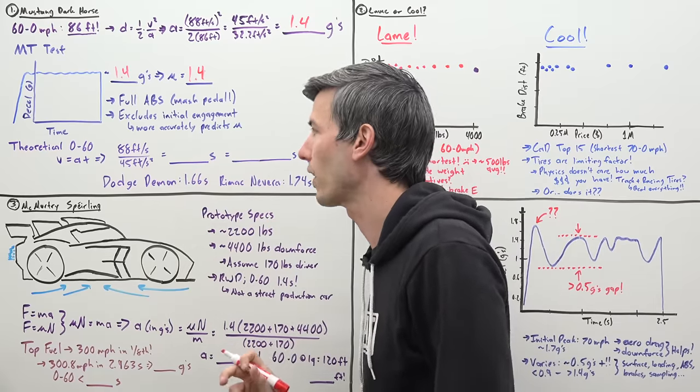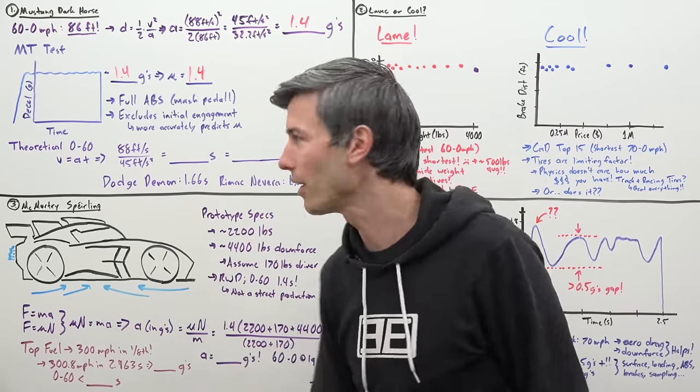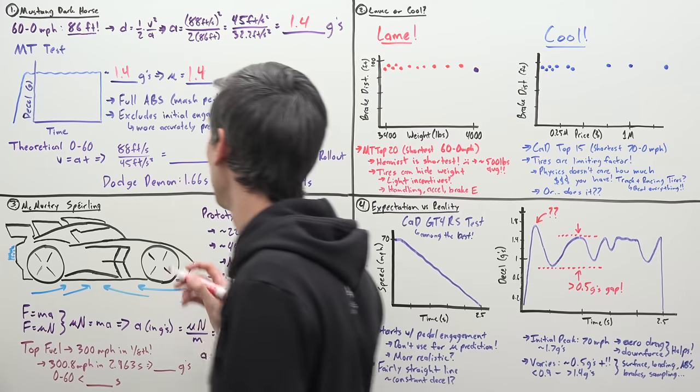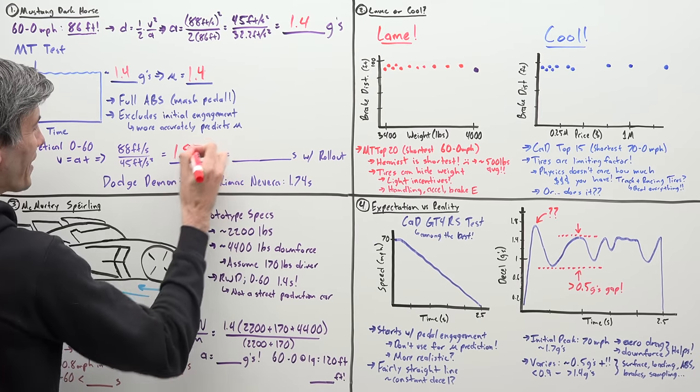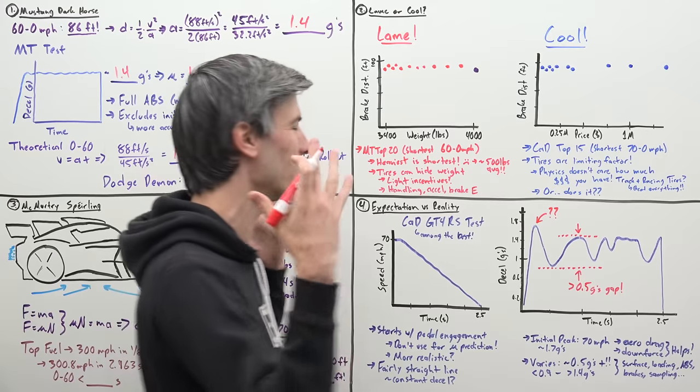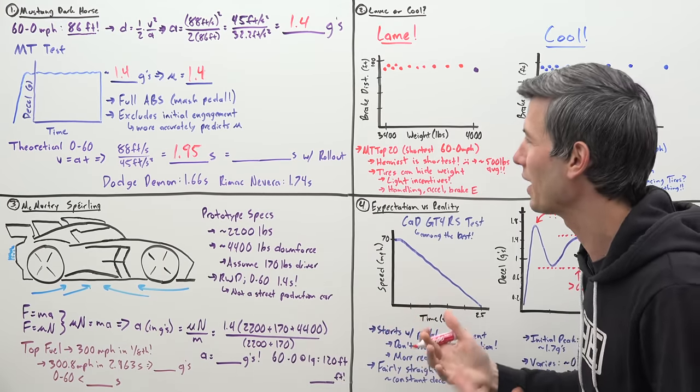In a previous video, I explained how you can use this frictional coefficient to predict the theoretical best zero to 60 time possible for a production car to achieve because now today we're at the limit of our tires. We're no longer limited by horsepower as far as what zero to 60 times we can get. So using this frictional coefficient of 1.4, we can use our equation velocity equals acceleration times time. We have 88 feet per second, which is equivalent to 60 miles per hour. Divide that by 45 feet per second squared, which is 1.4 G's just in dumb American units. And so you do that math, you divide and you get a time of 1.95 seconds.